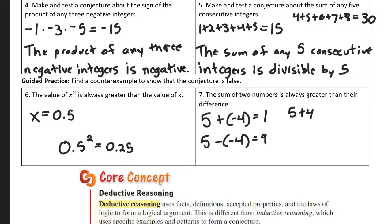Okay, so to explain making a conjecture for four and five, making and testing a conjecture about three negative integers, basically what I would say is any three negative numbers multiplied by each other, the result will always be negative. Because if you think about it, when I multiply the first two numbers, I get a positive. That means I'm multiplying a positive by a negative, which would result in a negative. So multiplying any three negative integers results in a negative value.